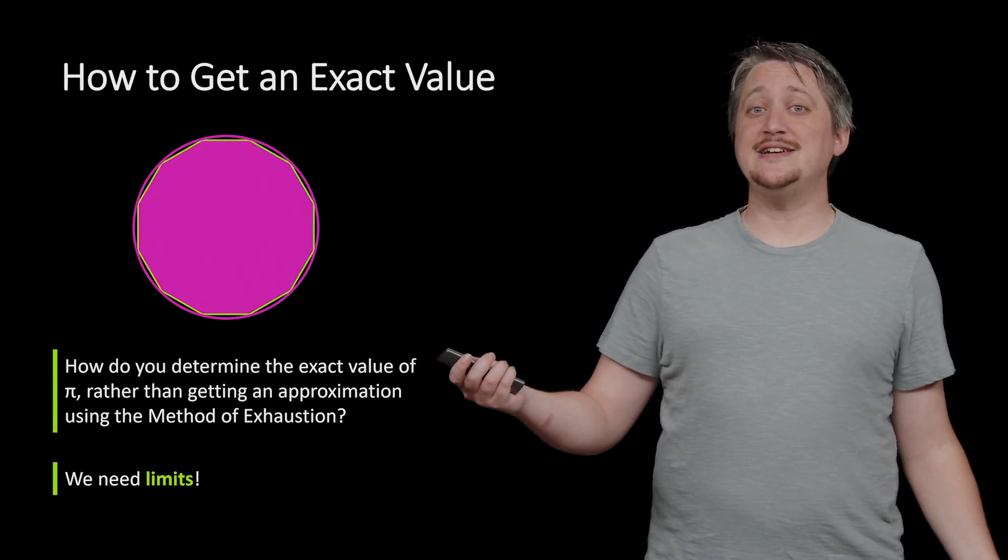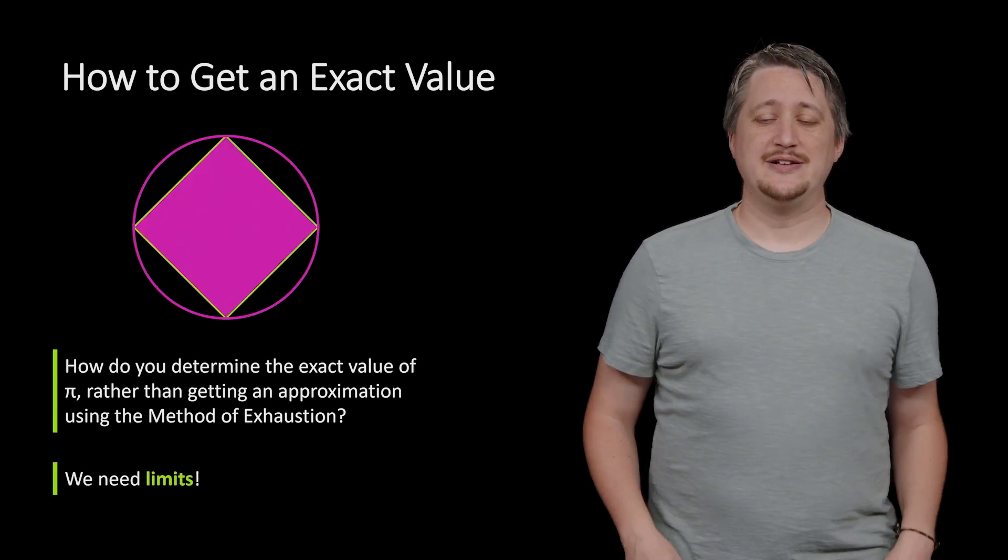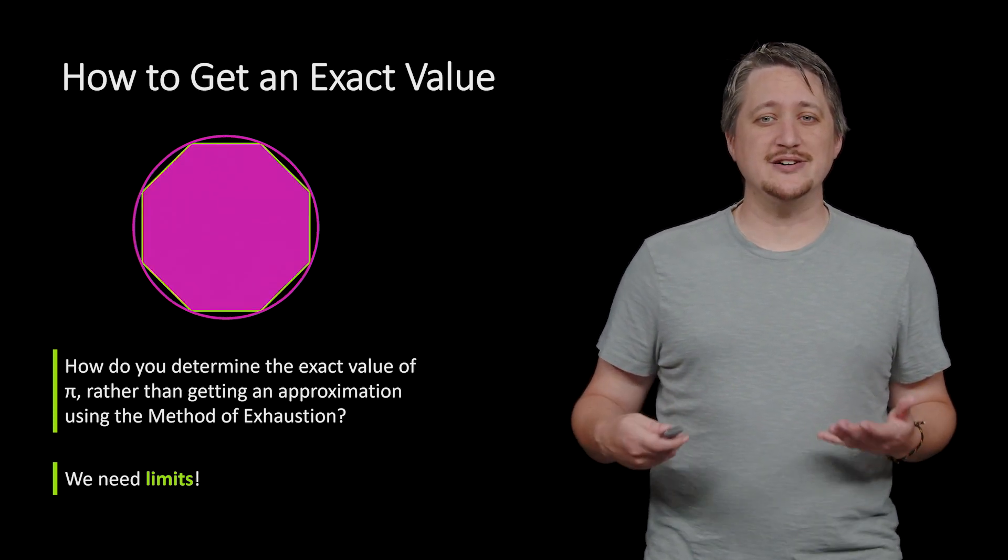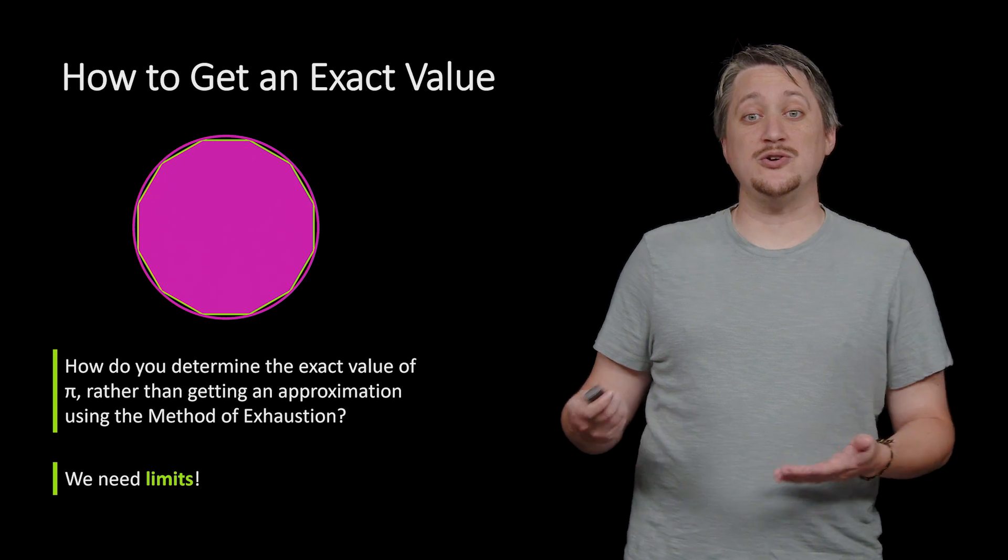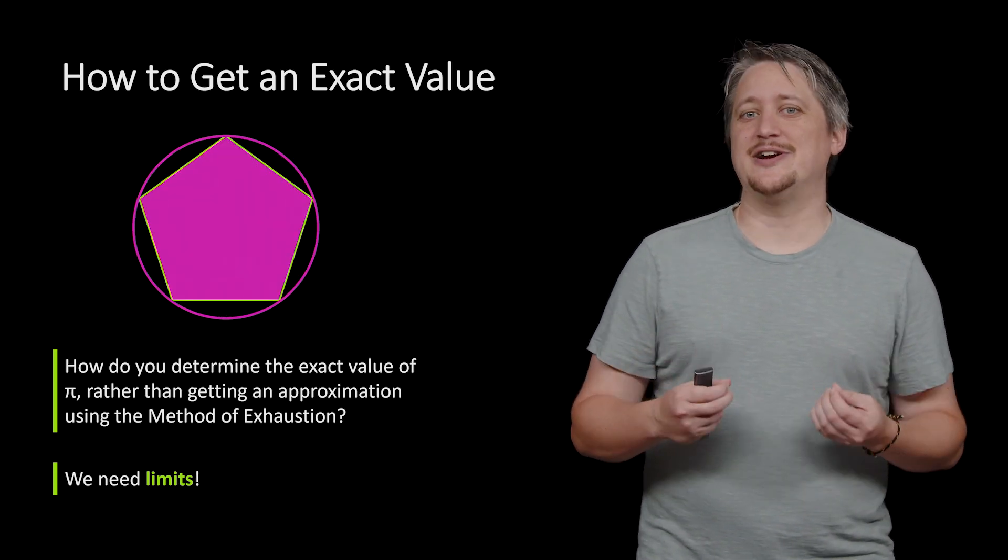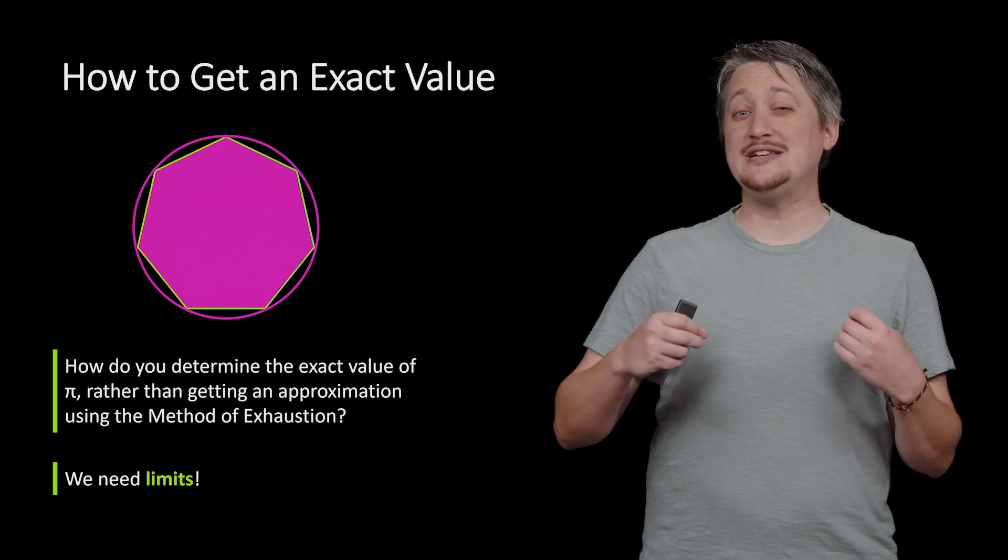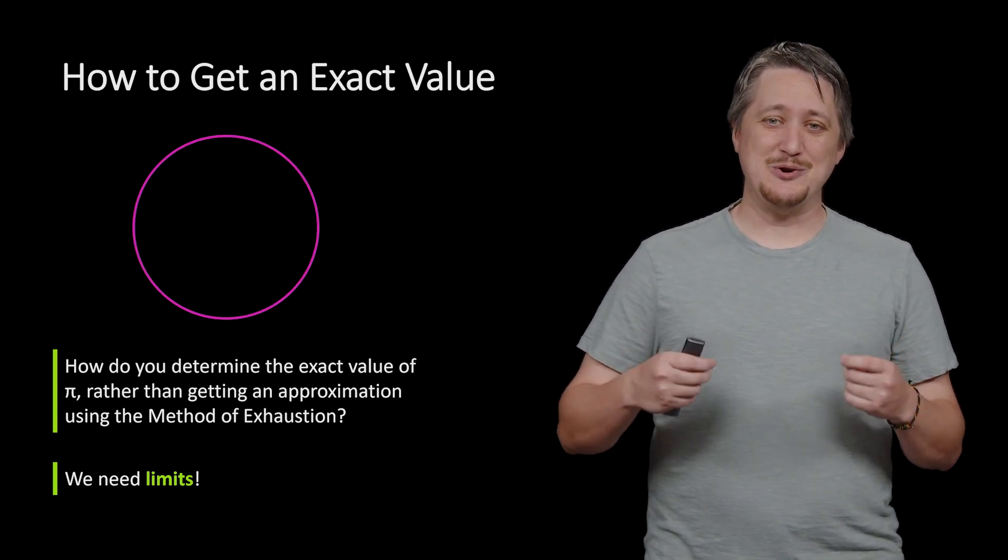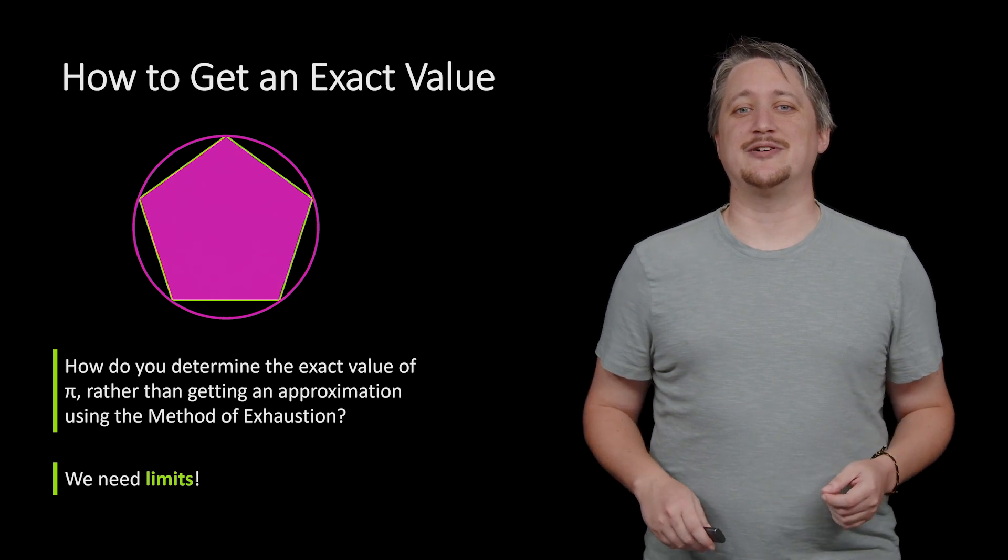Let's see how using a limit actually gives us an exact value. How do we know that we're getting exactly the right area and not just a really close approximation? We want to know that it actually is the right number. That's what we're going to see next.